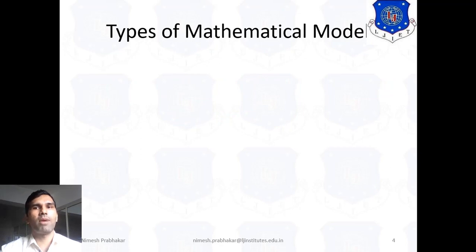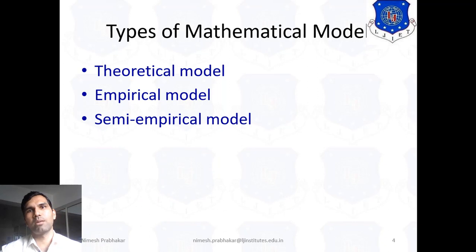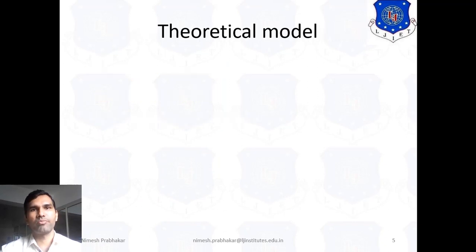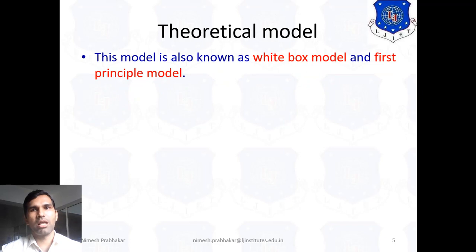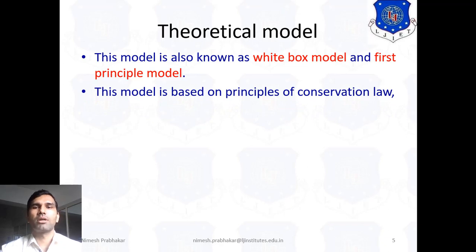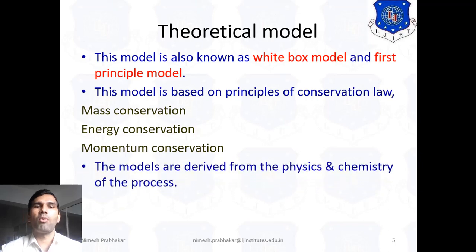There are mainly three types of mathematical models. The first type is the theoretical model, the second is the empirical model, and the last is the semi-empirical model. The theoretical model is also known as the white box model or first principle model. This model is based on the principle of conservation laws — like mass conservation, energy conservation, and momentum conservation. The models are derived from the physics and chemistry of the process.